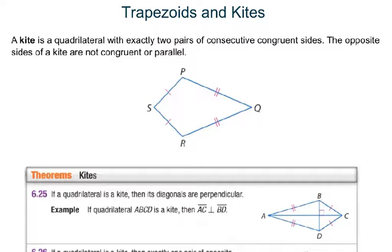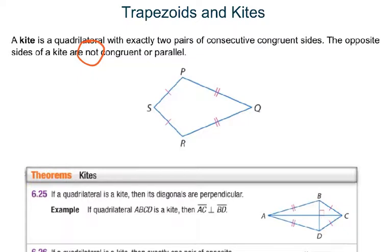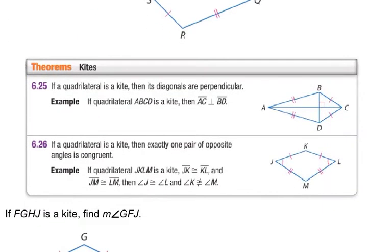Now let's talk about kites. A kite is a quadrilateral with exactly two pairs of consecutive congruent sides. The opposite sides of the kite are not congruent or parallel — it's the sides next to each other, the consecutive sides, that are congruent. A key characteristic of a kite is that the diagonals are perpendicular.